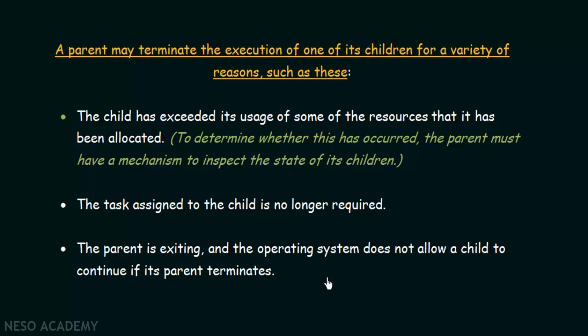We have seen what reasons cause a parent to terminate its children, and when termination of a process occurs — either when the process finishes its own execution, or when the parent kills its children due to one of these reasons. That covers process termination as an operation on processes.